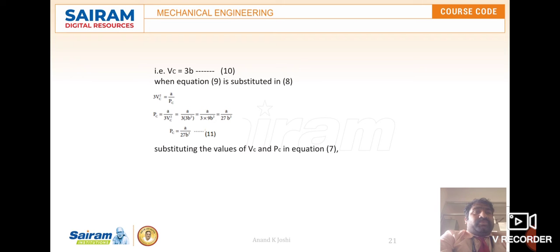When equation 9 is substituted into equation 8, we get: 3Vc² = a/Pc, so Pc = a/(3Vc²). Since Vc = 3b from equation 9 rearranged, substituting gives Pc = a/(3 × 9b²) = a/27b². Therefore Pc = a/27b², which is equation number 11.